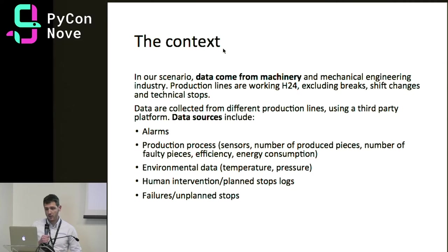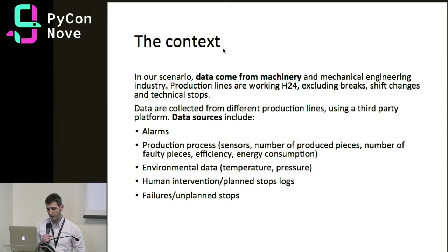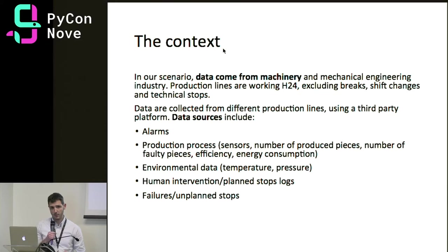We have different kinds of data. Each data source includes a different kind of data. We have alarms of different kinds, production process data like sensor data from IoT devices, and we can measure variables like the number of pieces produced per interval of time, the number of faulty pieces, process efficiency, and energy consumption. We also have logs describing human interventions and planned maintenance stops, and finally data about failures — unplanned stops.